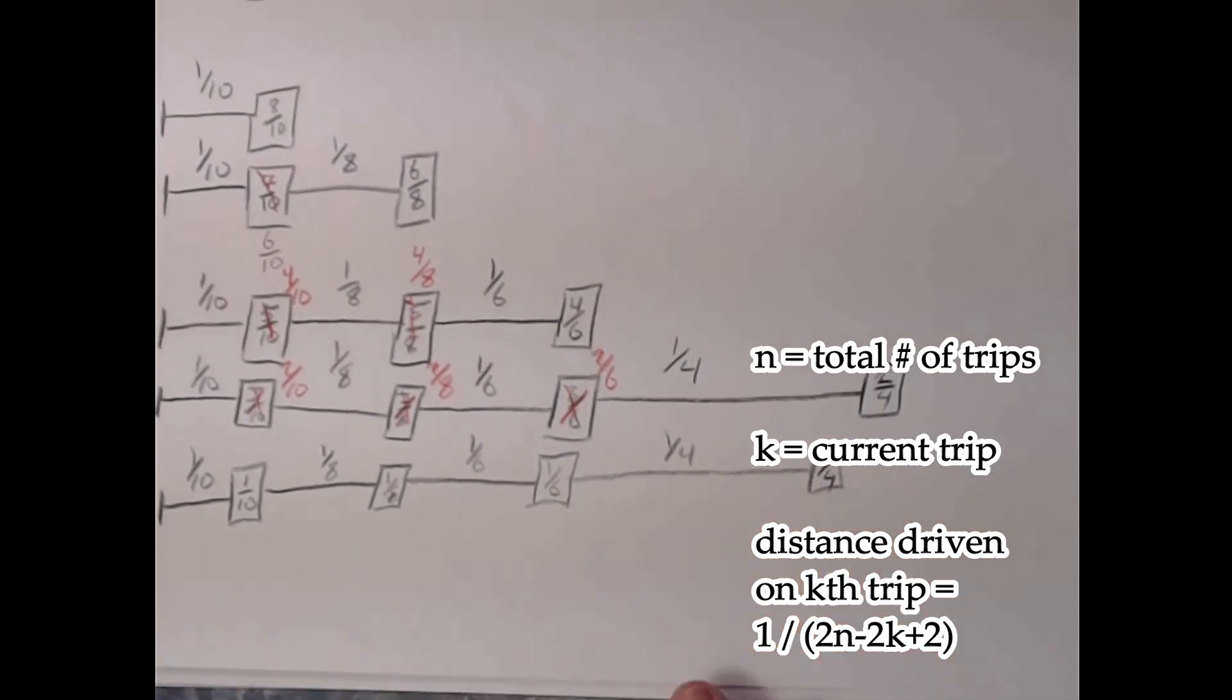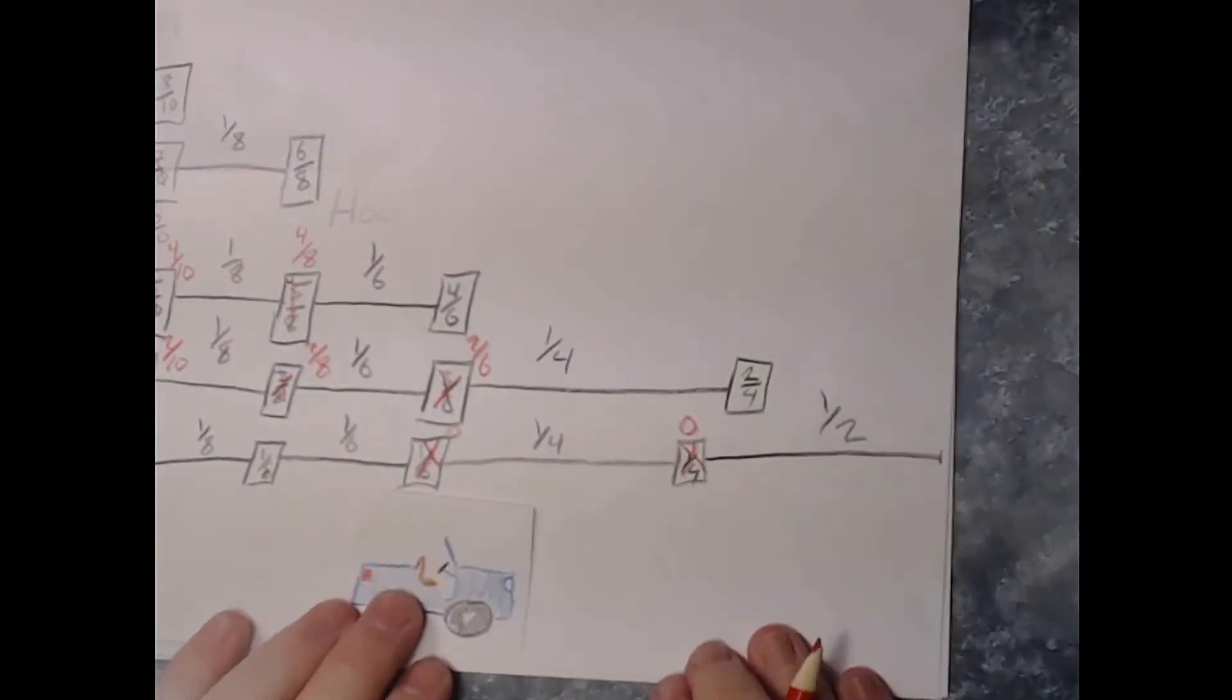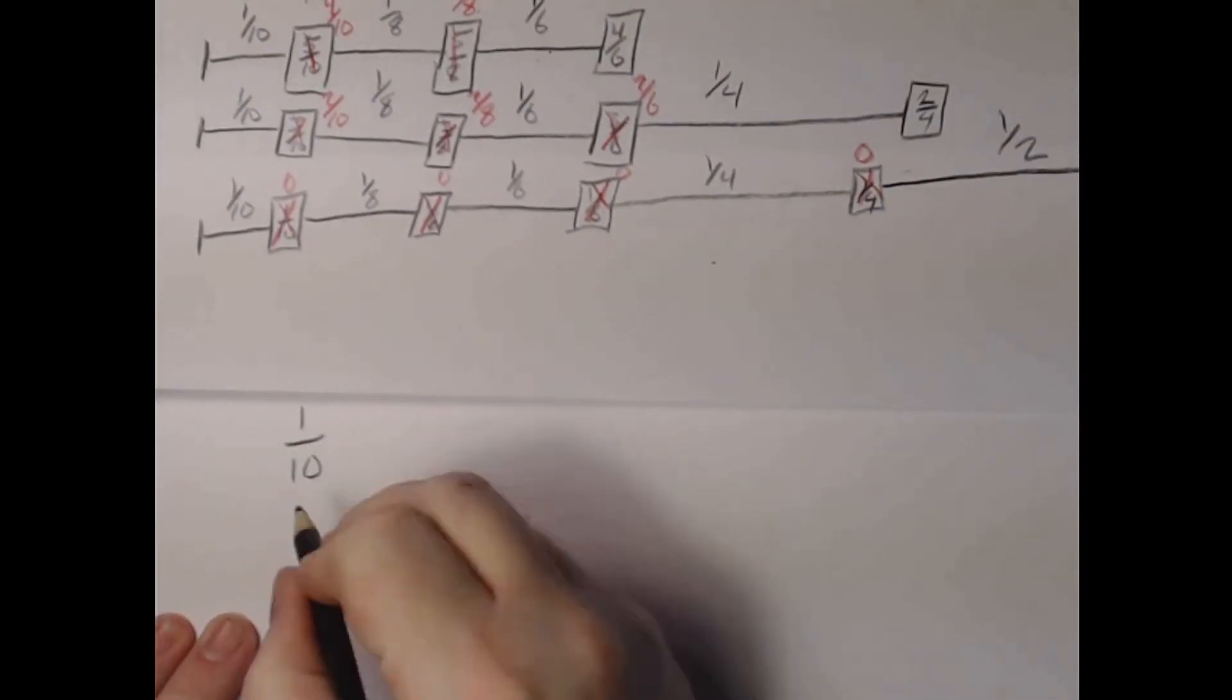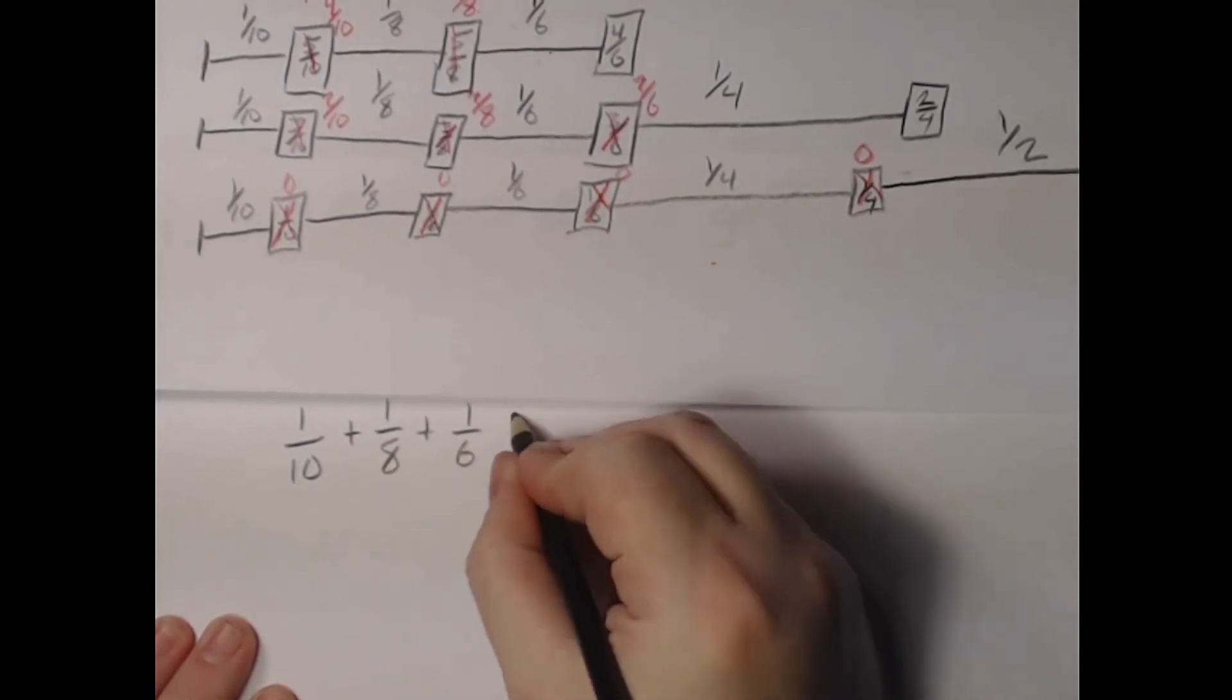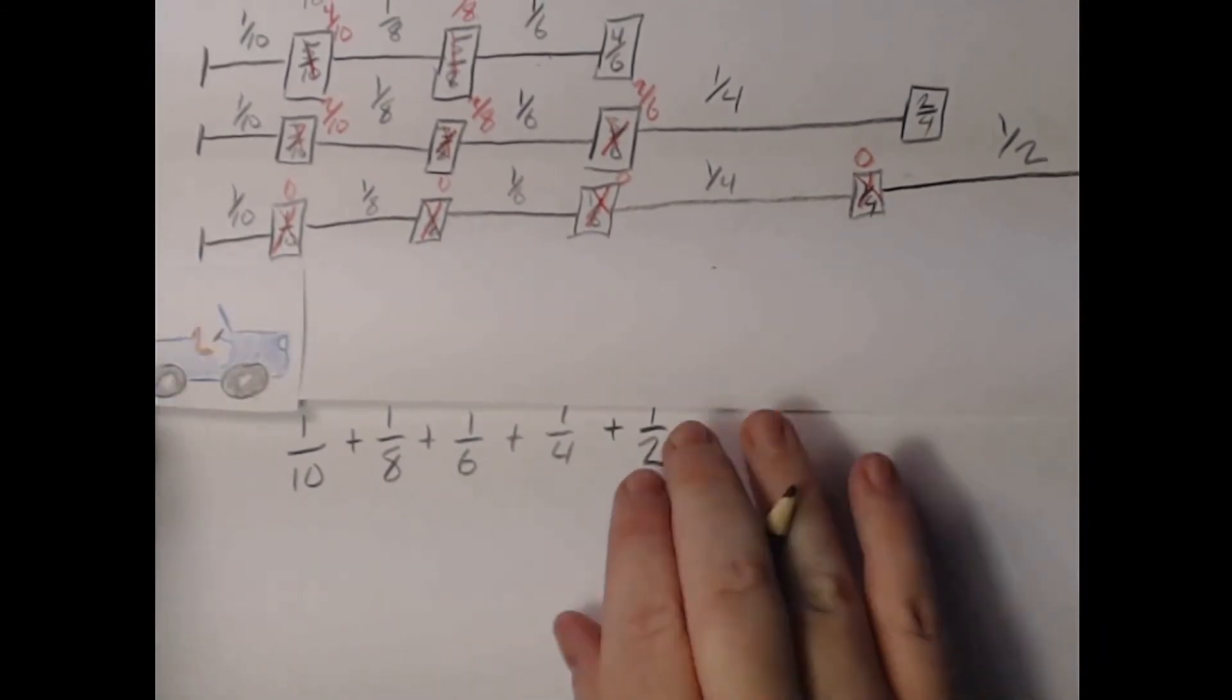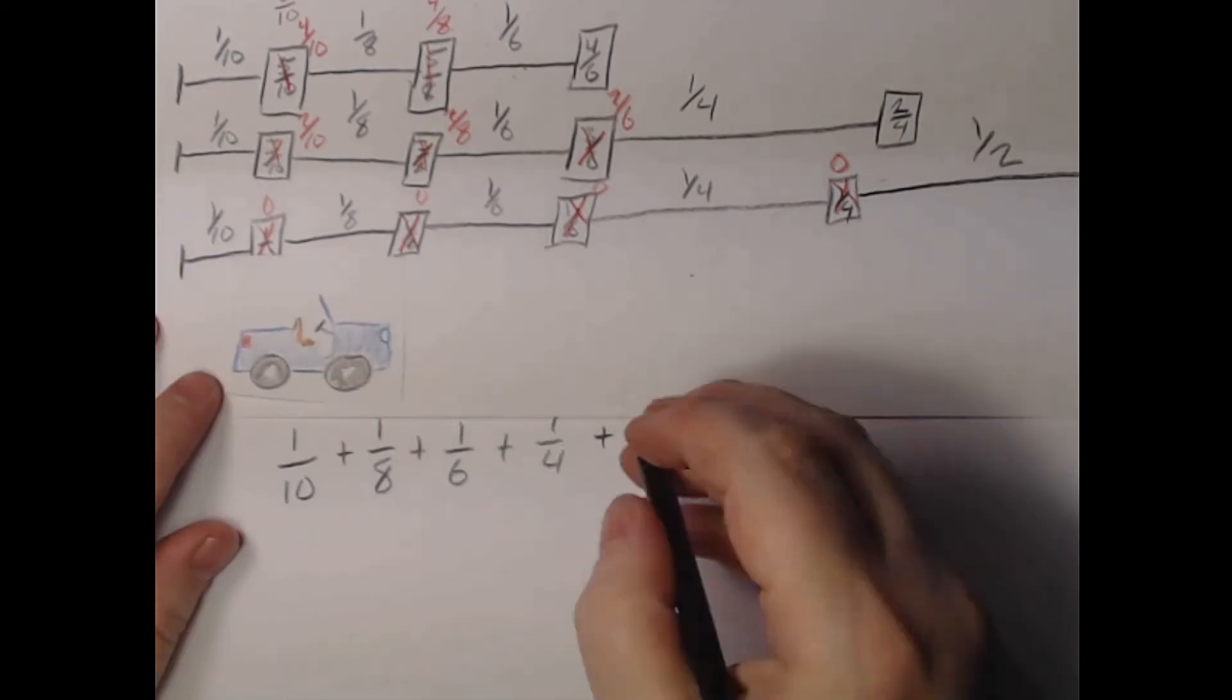In this example we end up traveling one-tenth, one-eighth, one-sixth, one-fourth, and one-half. If we count the return trip, our total distance on the last trip is twice these values.